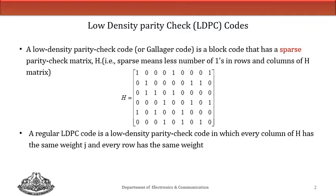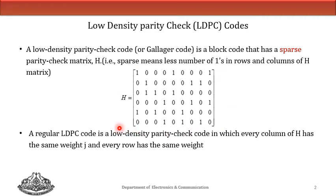There are nine columns in this H matrix. The first column consists of two ones, the second column two, the third column again two, the fourth column two, the fifth two, and columns six through nine all have two ones as well. So all columns have the same weight of two. This H matrix has a row weight of 3 and a column weight of 2, making this a regular LDPC code.